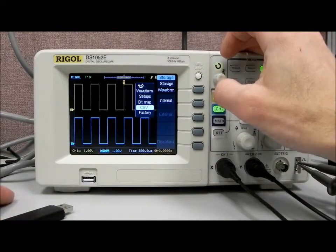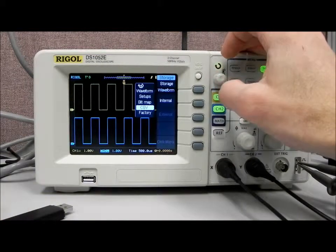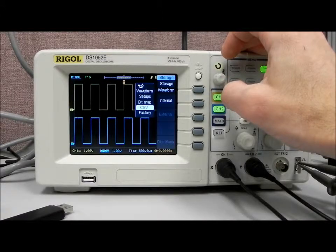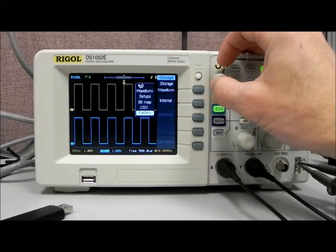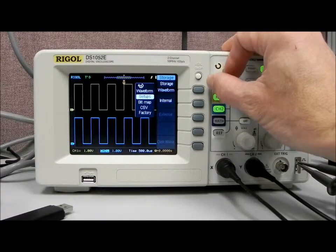CSV is going to be comma delimited, so we could use that in an Excel or other spreadsheet sort of file in order to do graphing and other analysis. And again, factory is going to return us back to factory defaults.